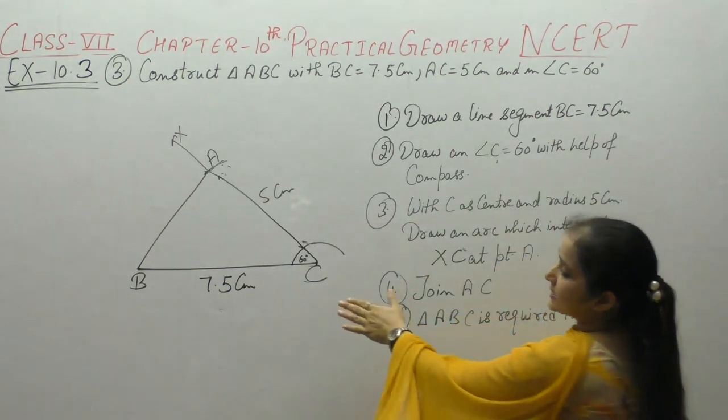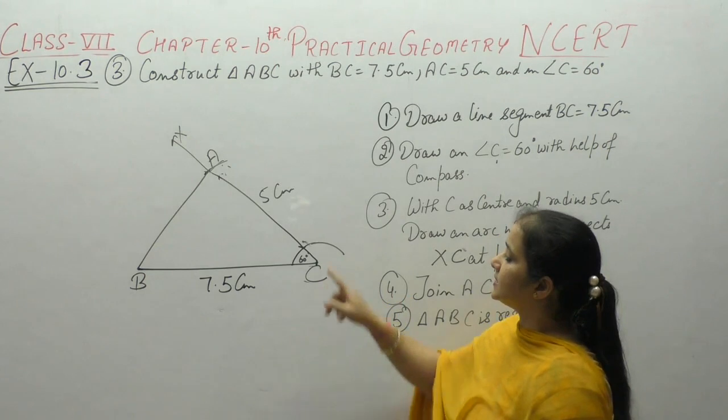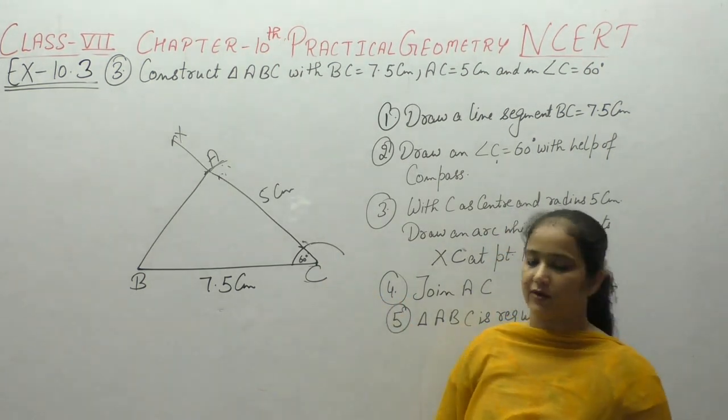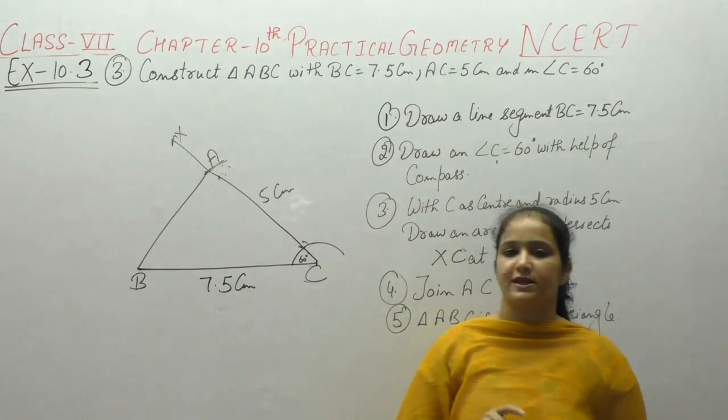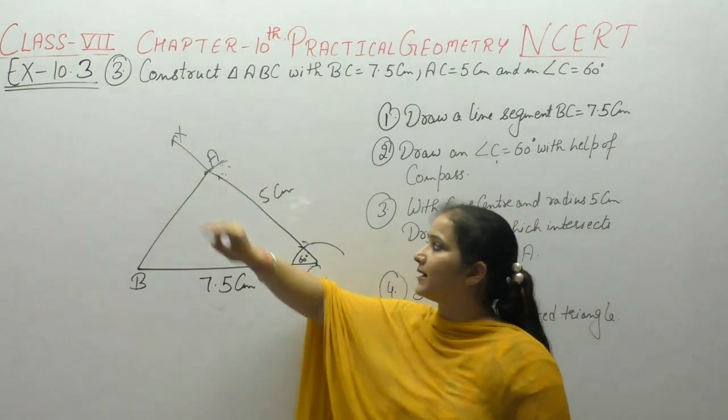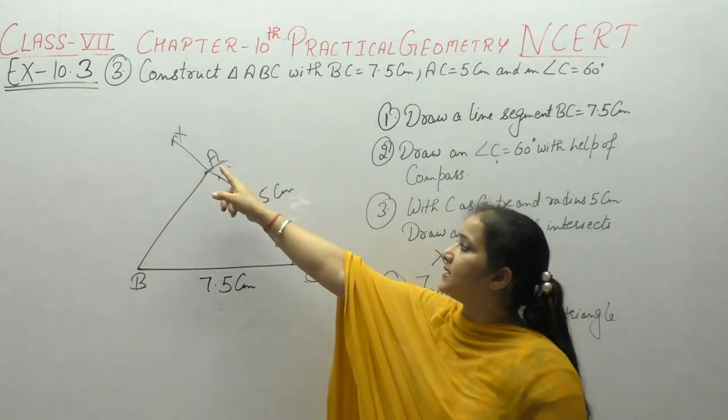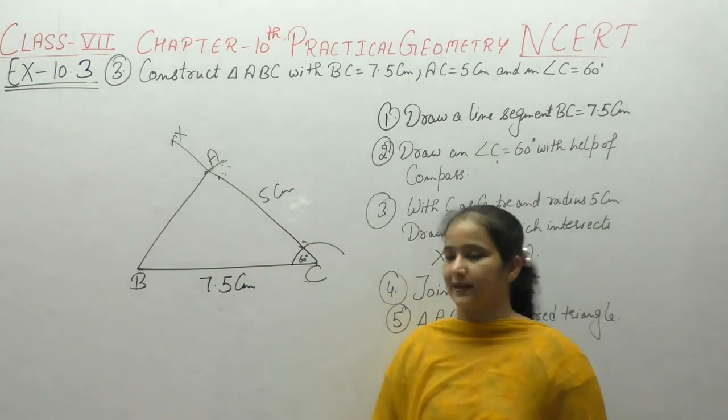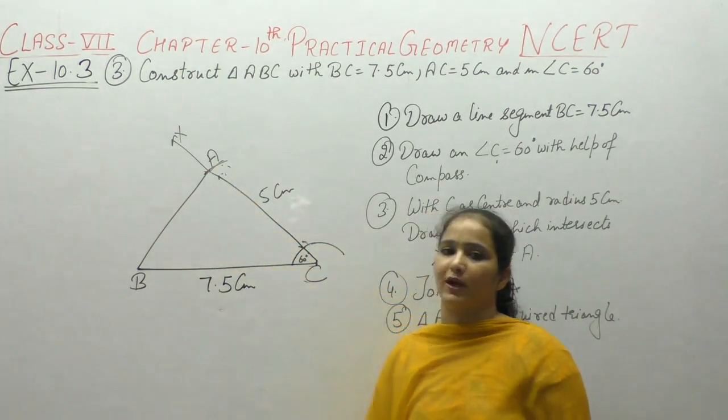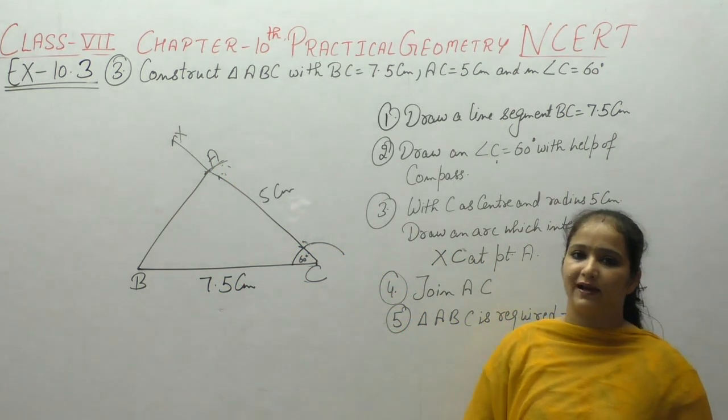So the triangle ABC we wanted, we got it. BC is 7.5 cm, at C 60 degree with the help of compass. C as center, 5 cm radius, arc drawn which line XC at point A cuts. A joined to B. ABC is our required triangle.